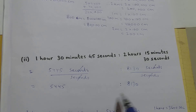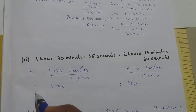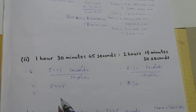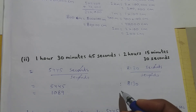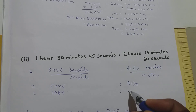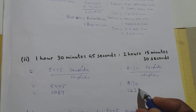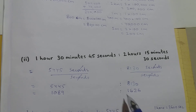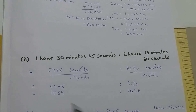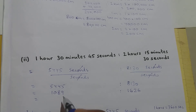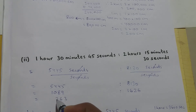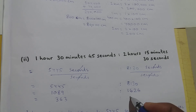Now we get 5445 is to 8130. Both are natural numbers and both are divisible by 5. So I will divide both by 5. 5445 ÷ 5 = 1089; 8130 ÷ 5 = 1626. So we get 1089 is to 1626. Both are divisible by 3, so I will divide both by 3. 1089 ÷ 3 = 363; 1626 ÷ 3 = 542.